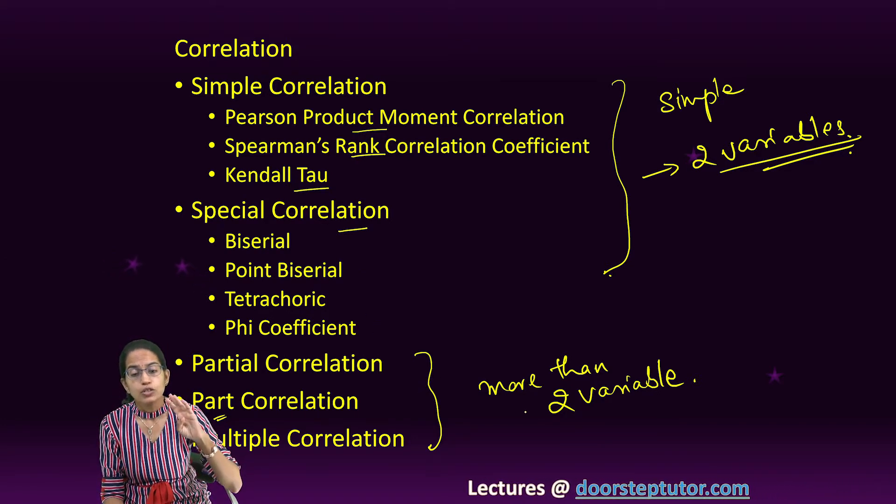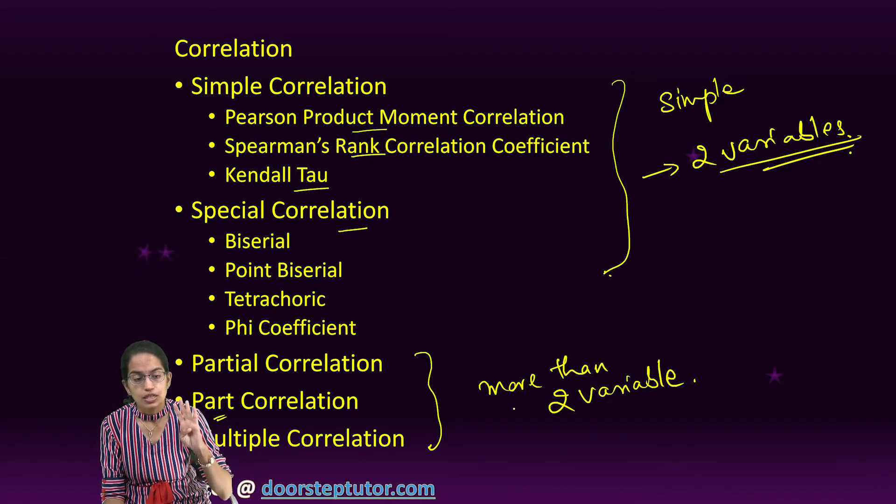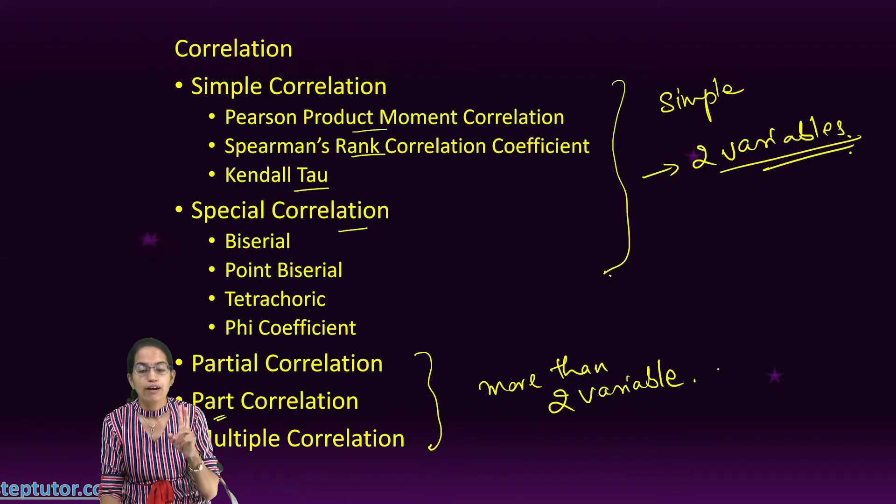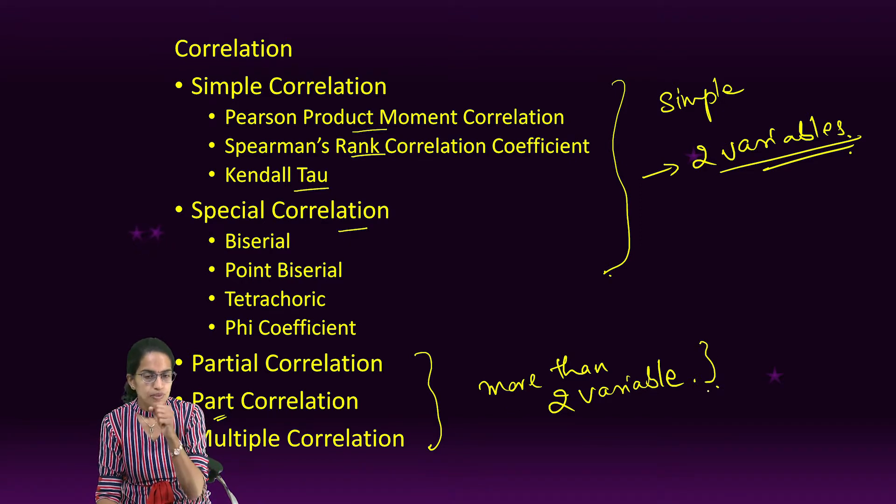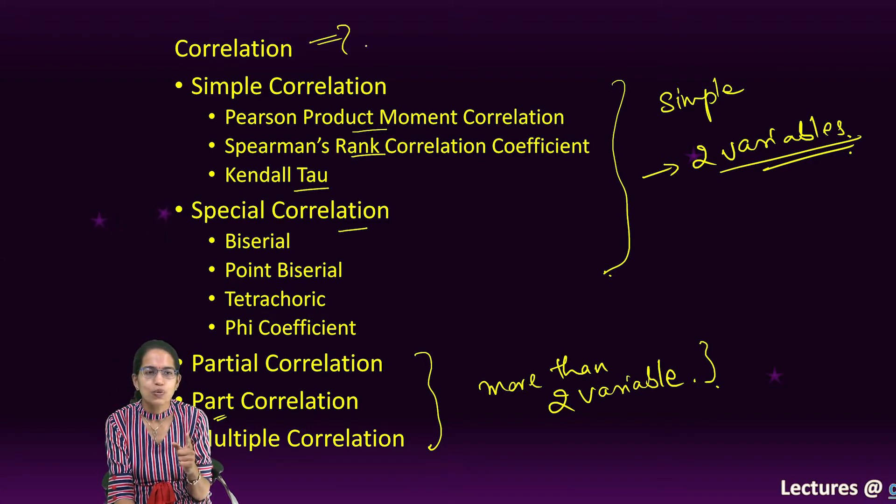For special correlation, we have biserial, point biserial, tetrachoric, and phi coefficient. Then we would understand when you have to apply partial, semi-partial, and multiple correlation - that's when you have more than two variables. Now what is the first question? The very first question is: what is correlation?